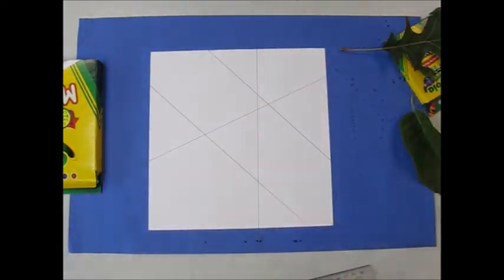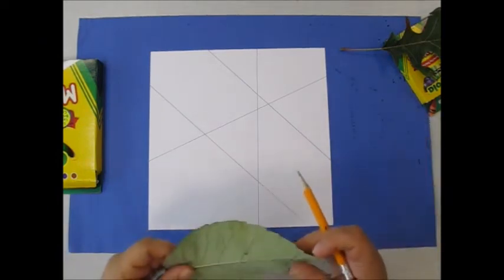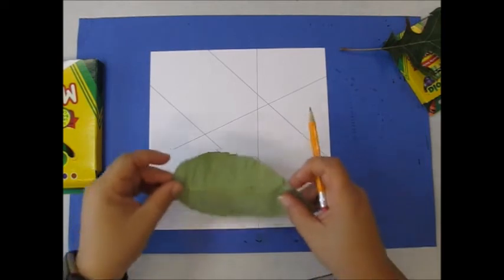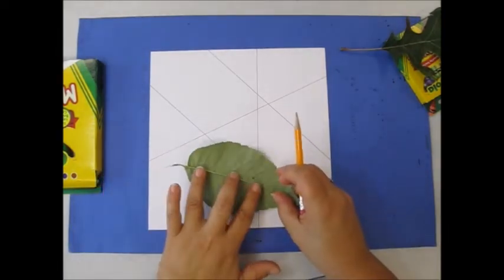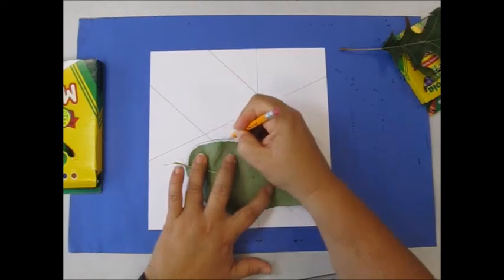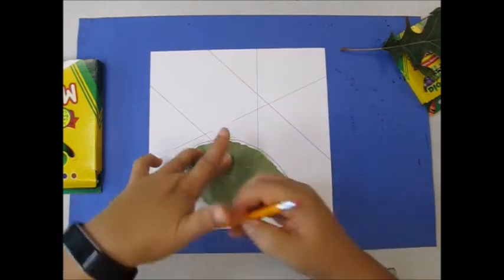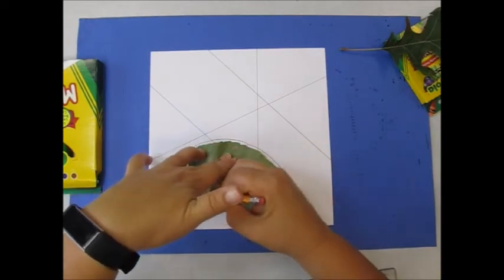Once you've drawn the four lines, you're going to take the leaf that you like. If you want two leaves you can use two leaves, and you're going to trace around the leaf. I have room on my paper that I can trace around two leaves. If you have a big leaf you might only want to do one.